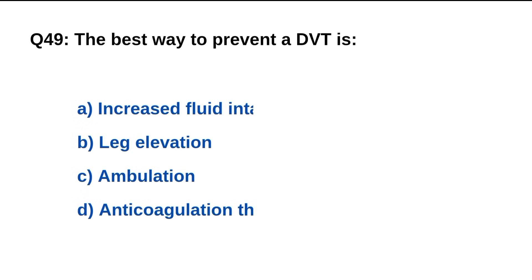Question number 49. The best way to prevent a DVT is? The right option is C: Early ambulation.